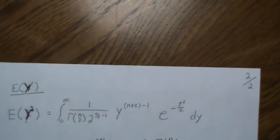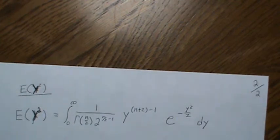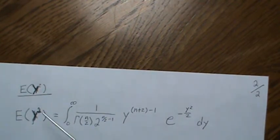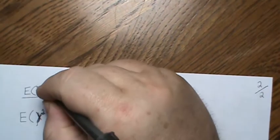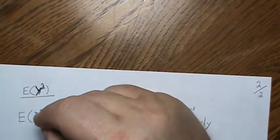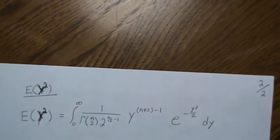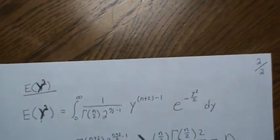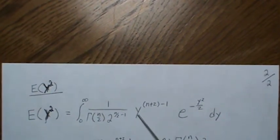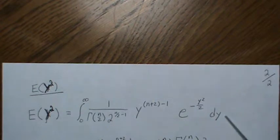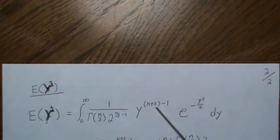Now to derive the variance, we have to find E(Y²). We stick in Y² times our density, and that's what the plus two is right there.